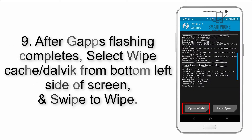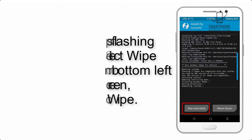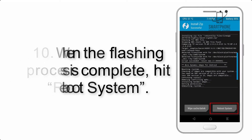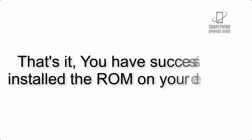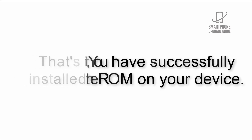Step 8: Flash the GApps zip package in the same manner. Step 9: After GApps flashing completes, select Wipe Cache and Dalvik from the bottom left side of the screen and swipe to wipe. Step 10: When the flashing process is complete, hit Reboot System. That's it — you have successfully installed the ROM on your device.